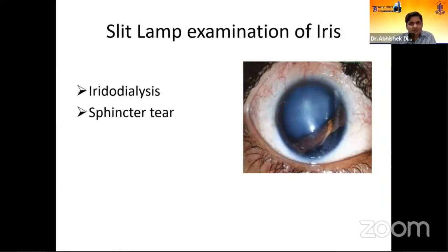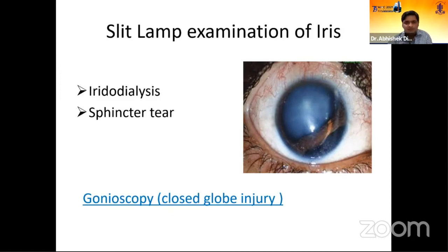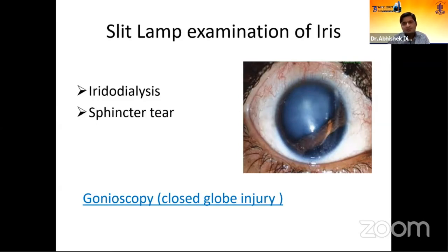For the iris, if there is iridodialysis along with the cataract, repair the dialysis at the same time. A sphincter tear suggests the patient may have post-operative glare and halos, which you should discuss before surgery. Gonioscopy is useful in chronic closed-angle injury cases where you are suspecting peripheral anterior synechiae or angle recession, which may require glaucoma filtration surgery later or at the time of cataract removal.